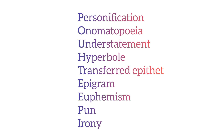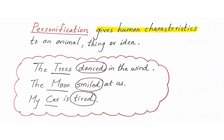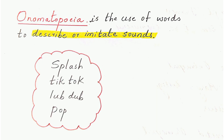Next we have personification, which is giving human characteristics to an animal, thing, or idea. We talk about something non-human as if it is a human. Examples: 'The trees danced in the wind' — only humans dance, but here the tree is personified. 'The moon smiled at us' — the moon is personified. 'The car is tired' — the car is personified.